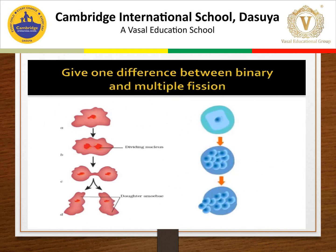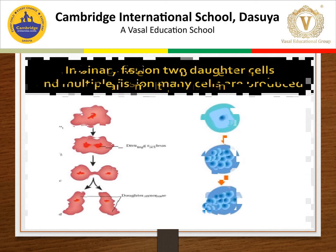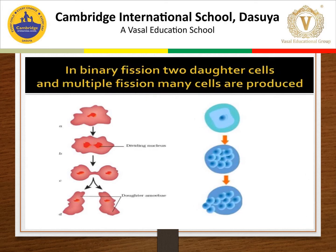One difference between binary fission and multiple fission: in binary fission, two daughter cells are produced; in multiple fission, many daughter cells are produced. Additionally, in binary fission, no cyst is formed, whereas in multiple fission, a cyst is formed.